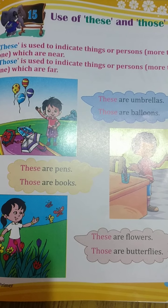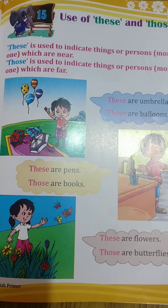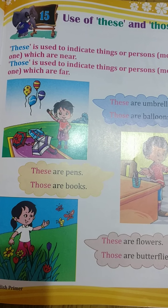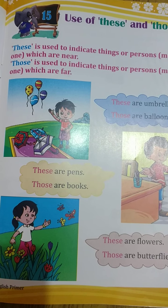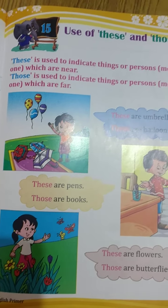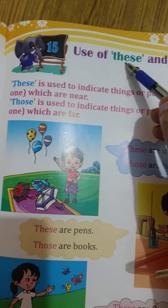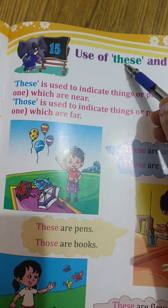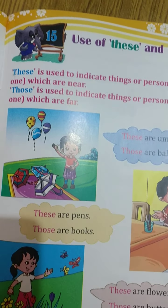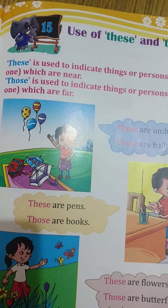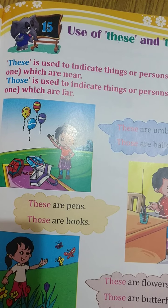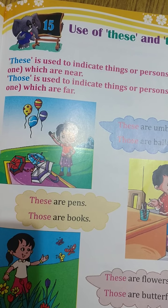Do you remember where we use 'this'? We use 'this' when things are near to us and must be singular. Similarly, 'these' is used when the object is near to us but the object must be plural.